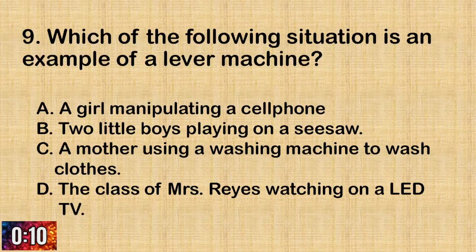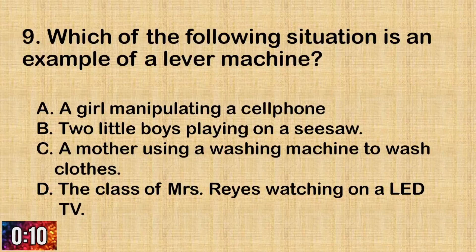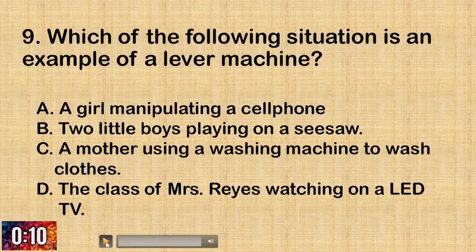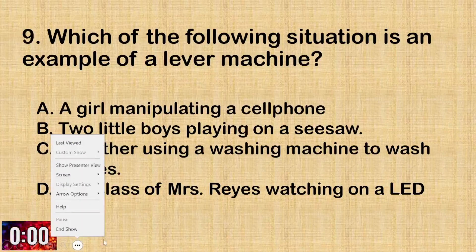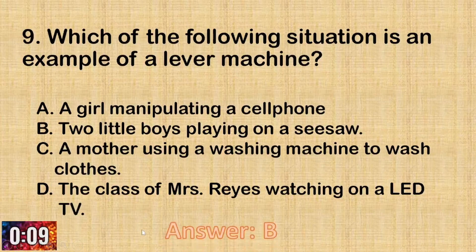Question number nine. Which of the following situation is an example of a lever machine? A. A girl manipulating a cell phone. B. Two little boys playing on a seesaw. C. A mother using a washing machine to wash clothes. D. The class of Mrs. Reyes watching on a LED TV. The correct answer is letter B: two little boys playing on a seesaw.